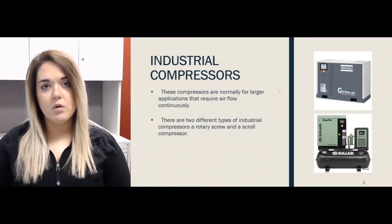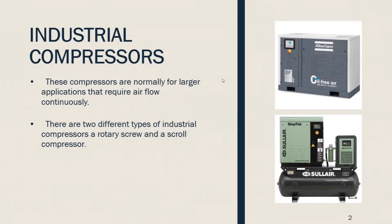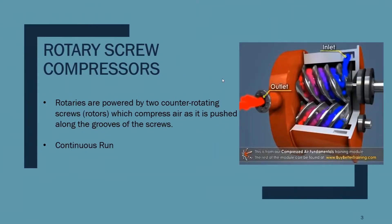Let's start off by talking about what an industrial air compressor is. It is a compressor normally used for larger applications that require continuous airflow. Air Compressors Direct carries two different types of industrial air compressors: one being rotary screw and the other being scroll, and in this video we're going to discuss the differences between both.